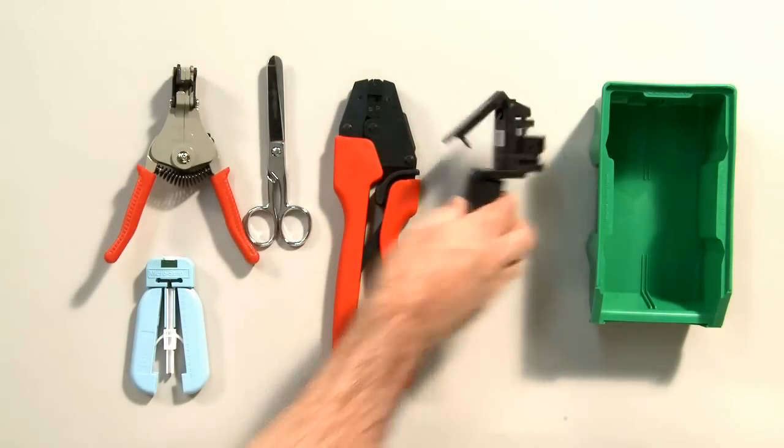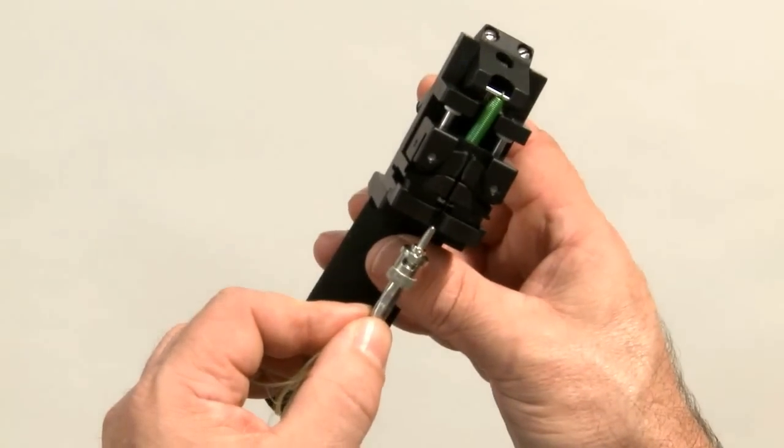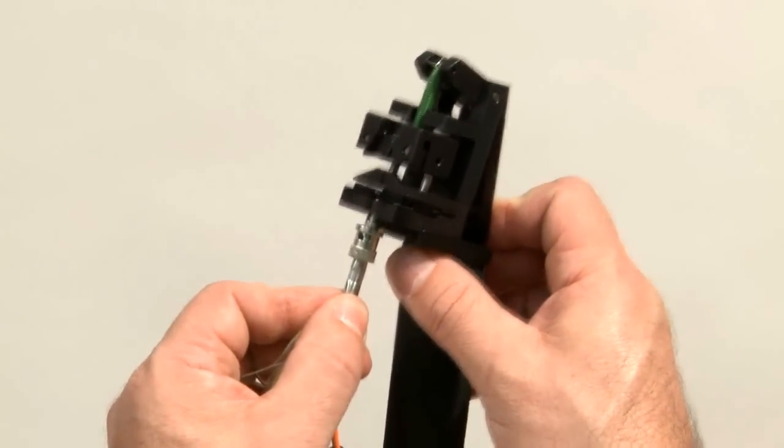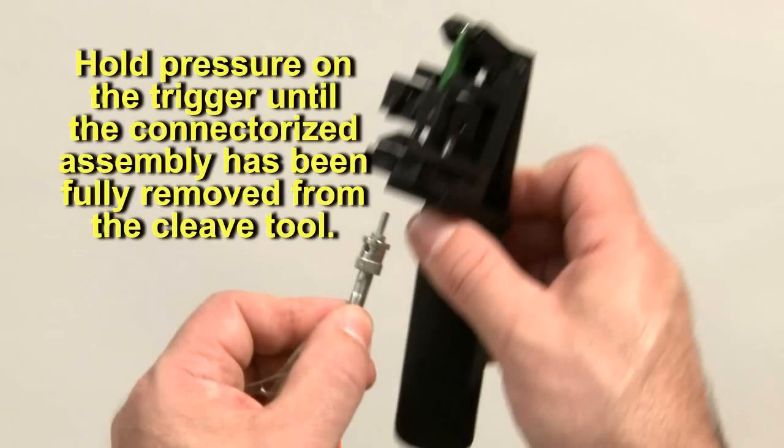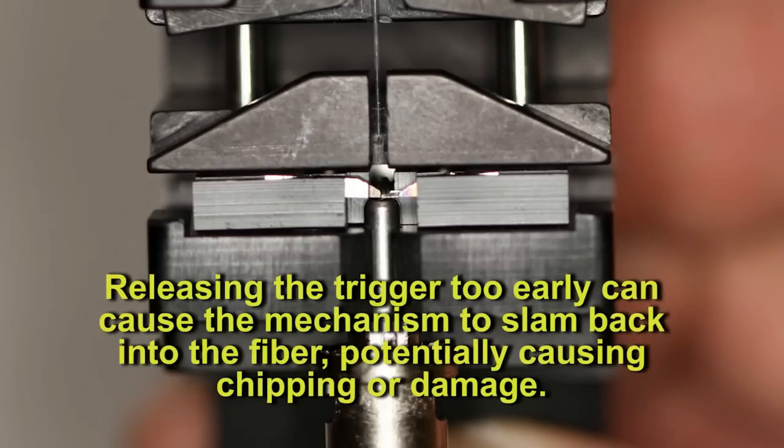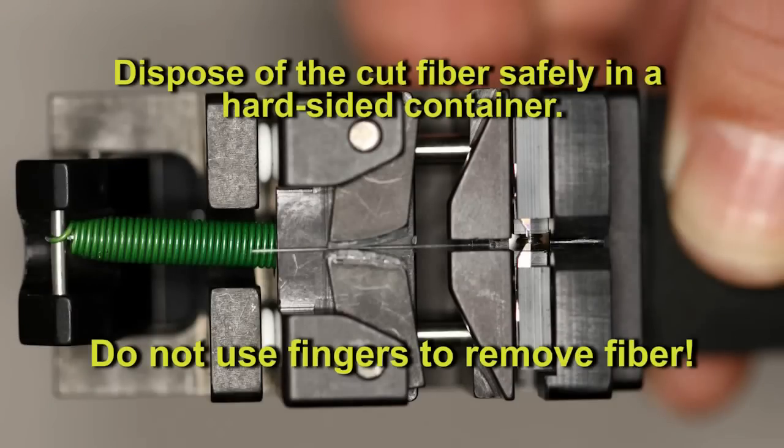Position the connector in the diamond cleave tool. Use your index finger to actuate the trigger on the cleave tool once the connector has been fully seated in the well. Slowly and gently depress the trigger to perform the cleave. Hold pressure on the trigger until the connectorized assembly has been fully removed from the cleave tool. Releasing the trigger too early can cause the mechanism to slam back into the fiber, potentially causing chipping or damage. Dispose of cut fiber safely in a hard-sided container.